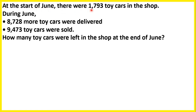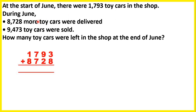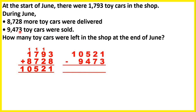At the start of June, there were 1,793 toy cars in the shop. During June, 8,728 more toy cars were delivered, and 9,473 toy cars were sold. How many toy cars were left at the end of June? Since more were delivered we add, and when cars are sold we subtract. First, 1,793 plus 8,728 gives us 10,521. Then we subtract the 9,473 cars that were sold, and that gives us 1,048.